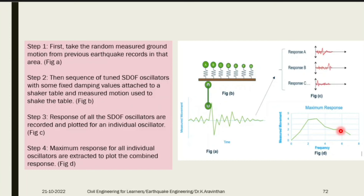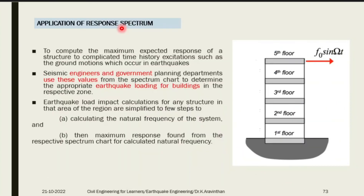The advantage of the response spectrum method is that you don't need to analyze the earthquake in all 360 degrees — finding the response in one direction is sufficient to find the peak response for a building. The maximum responses for all individual oscillators are extracted to plot the combined response spectrum, which is then recorded in the code book and used by engineers and government.